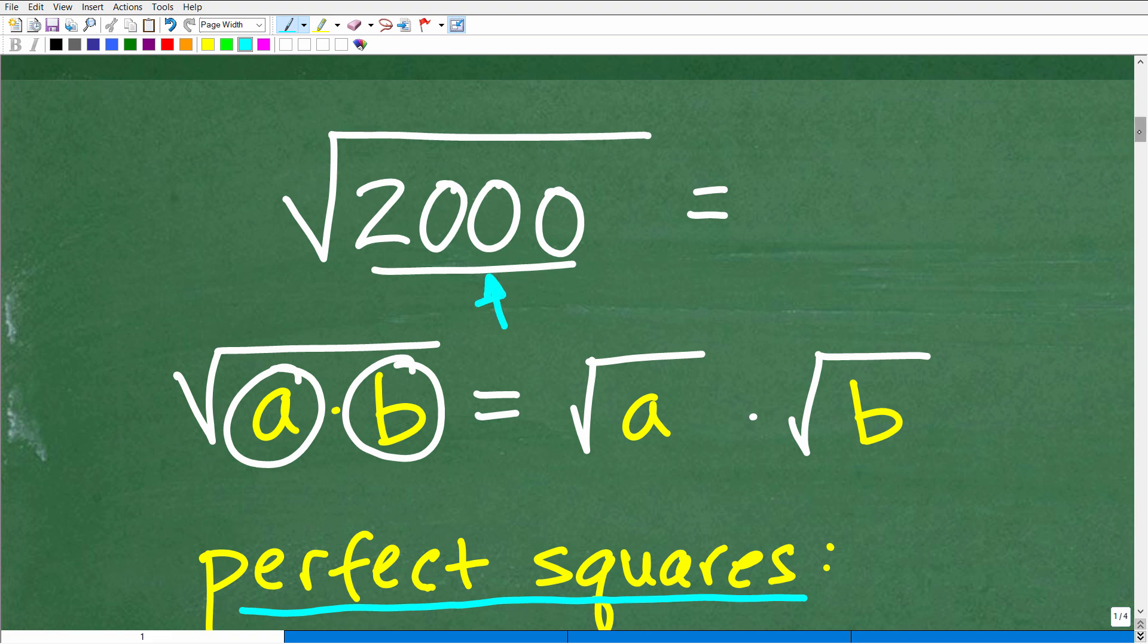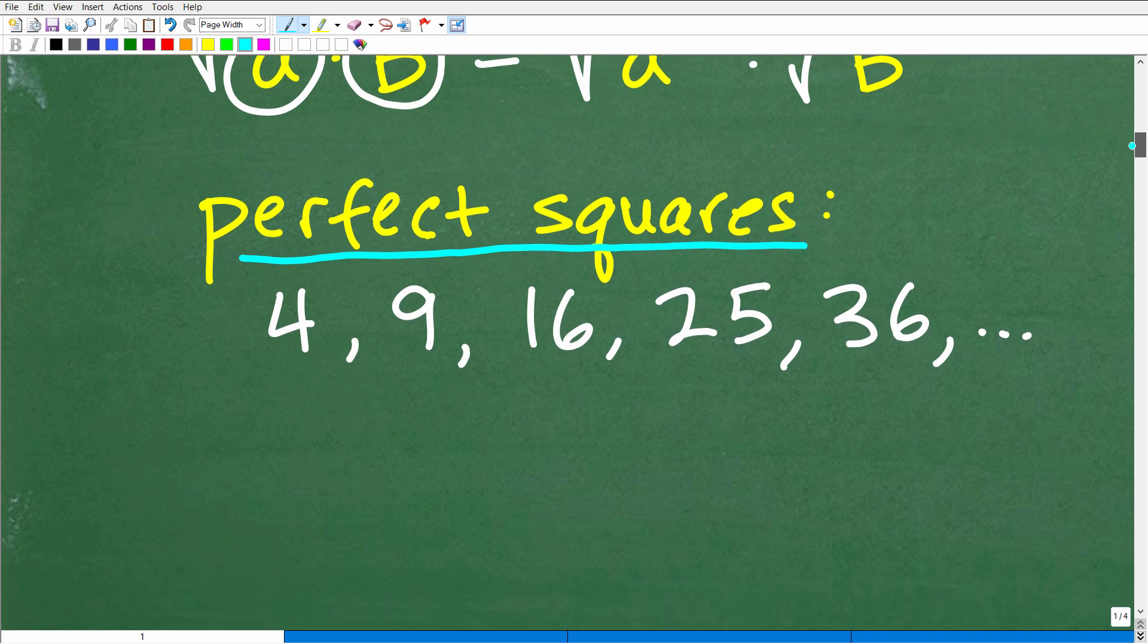Now, why are these numbers so important? Because each one of these perfect square factors, we can take the square root of, right? So the square root of 4 is 2. I don't need a calculator, and I'm not getting an irrational number or a decimal approximation. When I take the square root of these numbers, the square root of 9, of course, is 3. Square root of 16 is 4, and so forth.